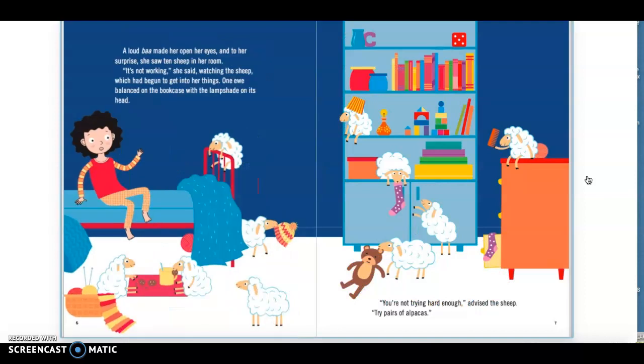A loud baaah made her open her eyes, and to her surprise, she saw ten sheep in her room. It's not working, she said, watching the sheep, which had begun to get into her things. One ewe balanced on the bookcase with the lampshade on its head. You're not trying hard enough, advised the sheep.